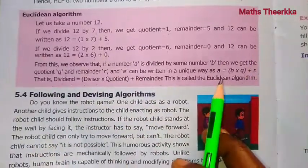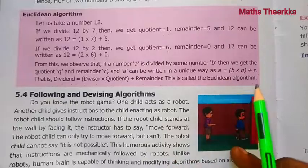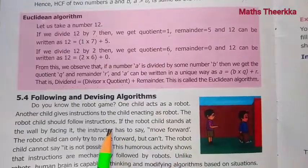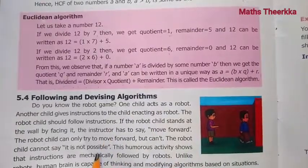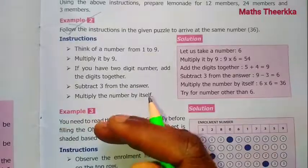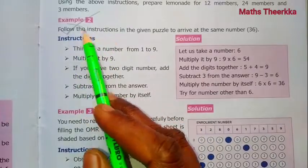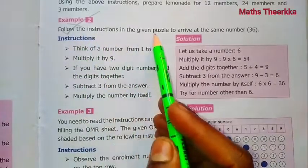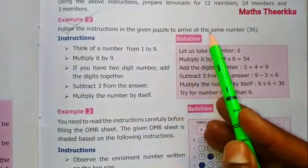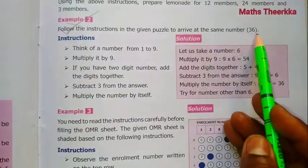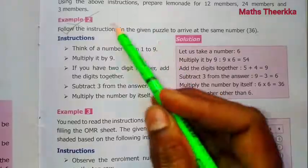This is the Euclidean algorithm. Euclidean algorithm example 2: Follow the instructions in the given puzzle to arrive at the same number 36.